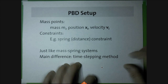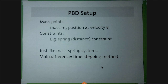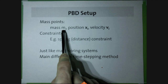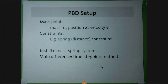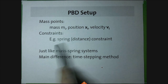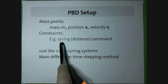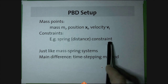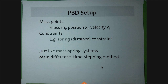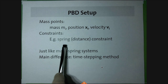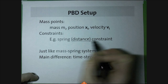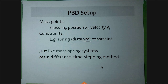The spatial discretization is the same essentially. We have some object, we discretize it using mass points. Each point has some mass, position, and velocity. We connect the mass points using the simplest, most standard constraint — the distance constraint. It's really analogous to a spring, but I'll try to stick to calling it a distance constraint because it's not exactly the same as a spring potential.